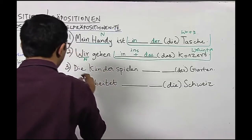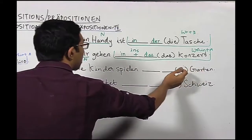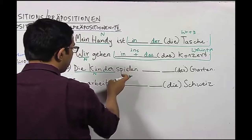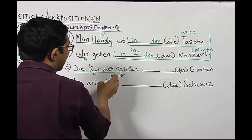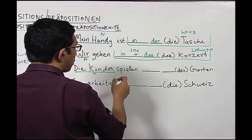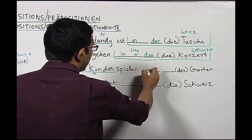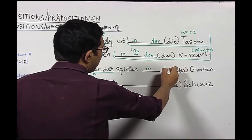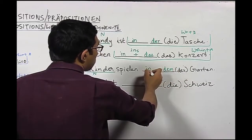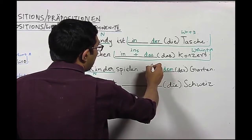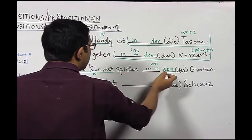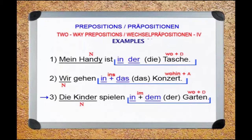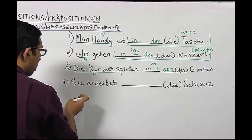Sentence number three: Die Kinder spielen im Garten. The nominative is 'die Kinder', and the verb 'spielen' acts as a dative verb because there is no movement from point A to point B. We use 'in' in the dative form. The article 'der' for Garten becomes 'dem' in dative, so we have 'in dem Garten', contracted to 'im Garten'. Either form is correct: Die Kinder spielen in dem Garten, or Die Kinder spielen im Garten.